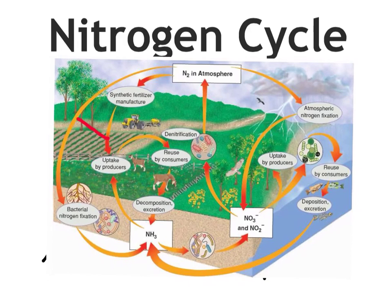The first thing to talk about is the nitrogen that's in the atmosphere — N2 — again, 78% of that is in the atmosphere. We'll follow some of the ways that it leaves the atmosphere. One way nitrogen can leave is called atmospheric nitrogen fixation.